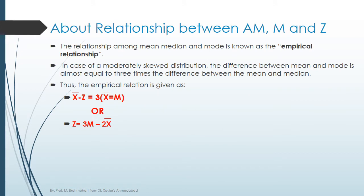Let's see about the relationship among AM, M, and Z. The relationship between mean, median, and mode is known as the empirical relationship between them.